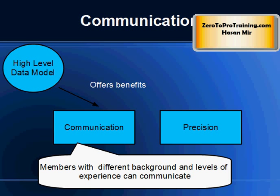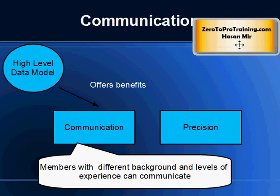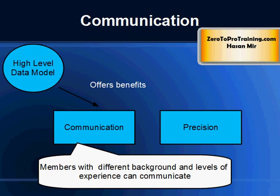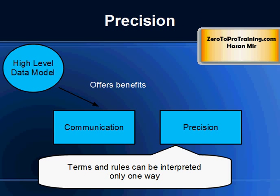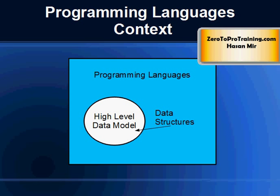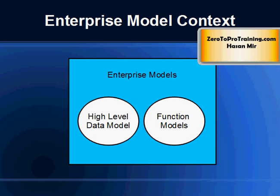A data model is the medium that helps team members from different backgrounds and with different levels of experience to communicate with one another. Precision means that the terms and rules on a data model can be interpreted only one way and are not ambiguous. A data model can sometimes be referred to as a data structure, especially in the context of programming languages. Data models are often complemented by function models, especially in the context of enterprise models.